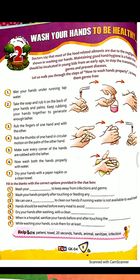Now fill in the blanks with the correct options provided in the clue box. First one: wash your hands to keep away from infection and germs. Second one: wash your hands properly after touching or feeding any animal. Third one: we can use a sanitizer to clean our hands if running water is not available to wash hands.